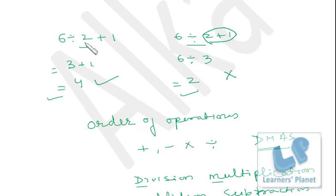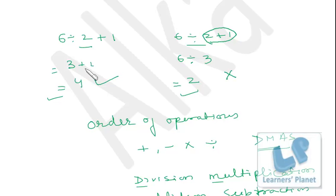According to the rules of D-M-A-S, first we perform division: 6 divided by 2 gives 3. Then, since there is no multiplication, we skip it and go to addition: 3 plus 1 equals 4. The other approach performed addition first, which is wrong. You have to be very clear with D-M-A-S — Division, Multiplication, Addition, Subtraction — and follow this order only.